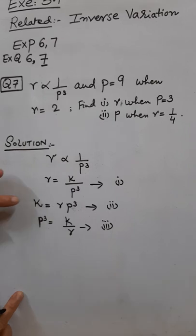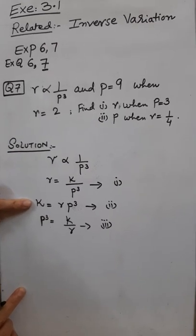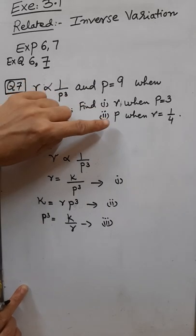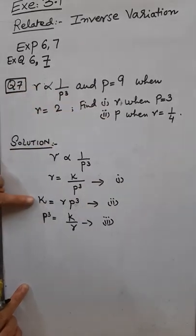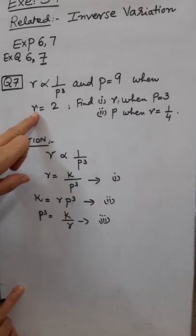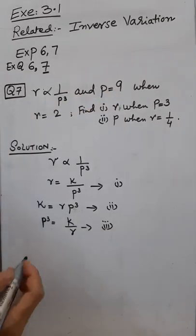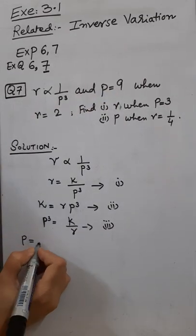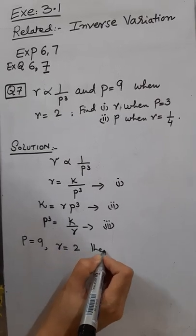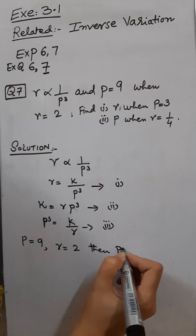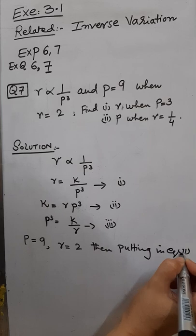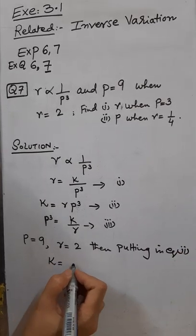First of all, we need to find the constant ratio, in order to find any other variable — R and P. But first of all, we'll have to find K. For K, we'll use the given values of R and P. So P equals 9, R equals 2 — putting these into equation number 2. By substituting in equation number 2, the constant ratio will be known.